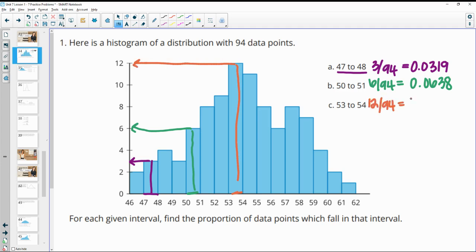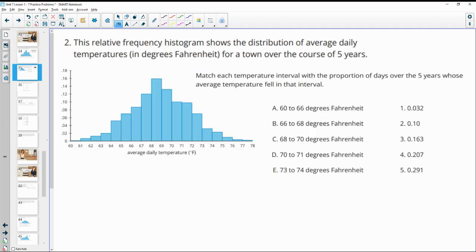Number two. The relative frequency histogram shows the distribution of average daily temperatures in degrees Fahrenheit for a town over the course of five years. Match each temperature interval with the proportion of days over the five years whose average temperature fell in that interval.